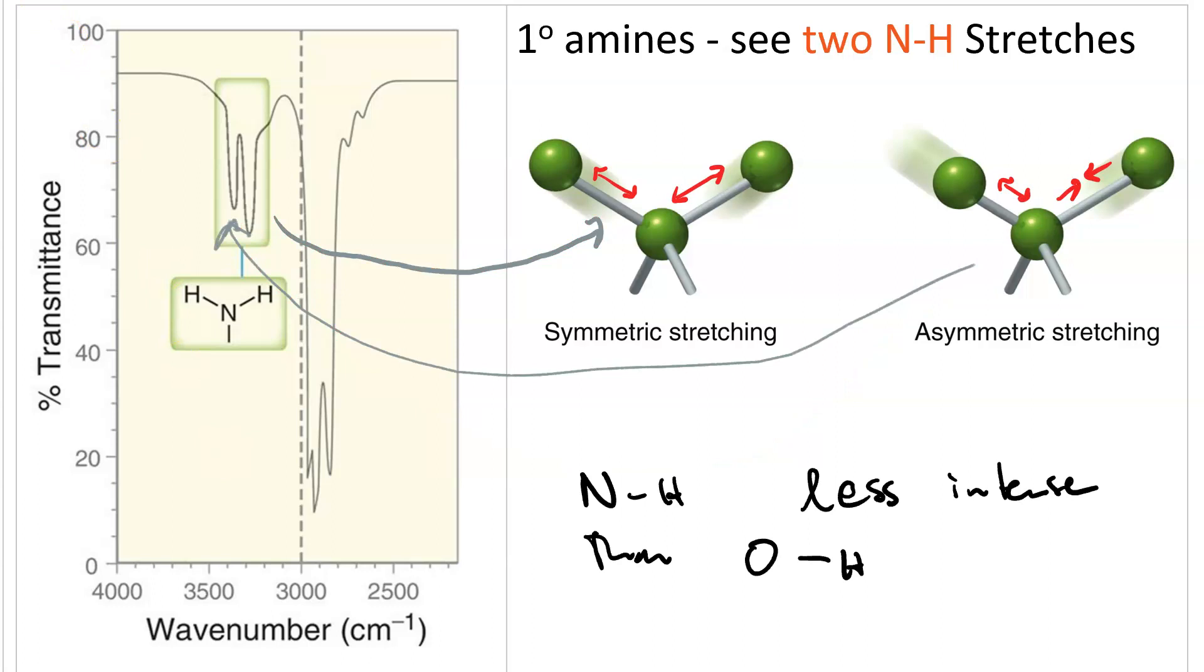You can go back to your general chemistry class. The electronegativity of a nitrogen is 3.0 and a hydrogen is 2.1. Here, the difference is 0.9. Whereas, oxygen is 3.5, with hydrogen's 2.1. The difference there is 1.4. So an OH stretch is more polar. Therefore, more intense.